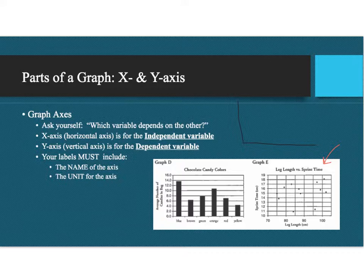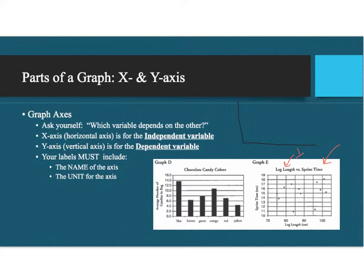For example, if we take a look at graph E — leg length versus sprint time — you would ask yourself: does the leg length depend on the sprint time, or does the sprint time depend on the leg length? It makes more sense that your time would depend on how long your legs are. So your independent variable is going to be leg length, and your dependent variable is sprint time because the time depends on the length.